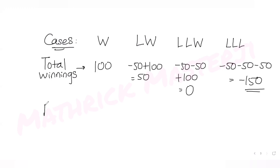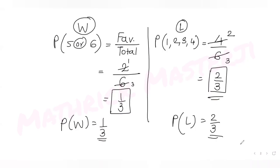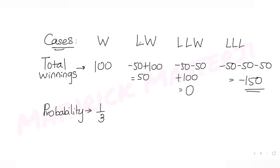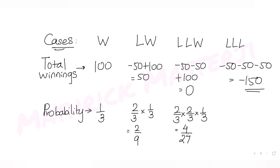Now let's find the probability for each case. Case one — direct win: probability is 1/3. Case two — loss then win: (2/3) × (1/3) = 2/9. Case three — two losses then win: (2/3) × (2/3) × (1/3) = 4/27. Case four — three losses: (2/3)³ = 8/27. These are the probabilities for all four cases.